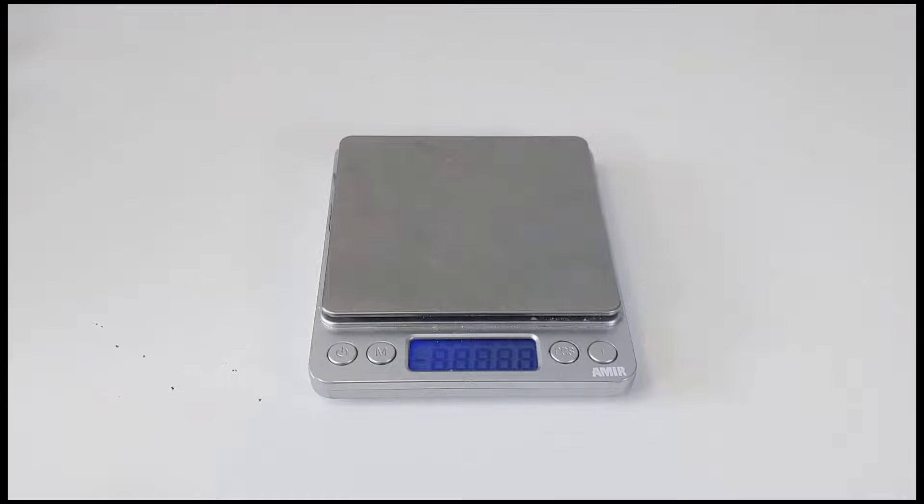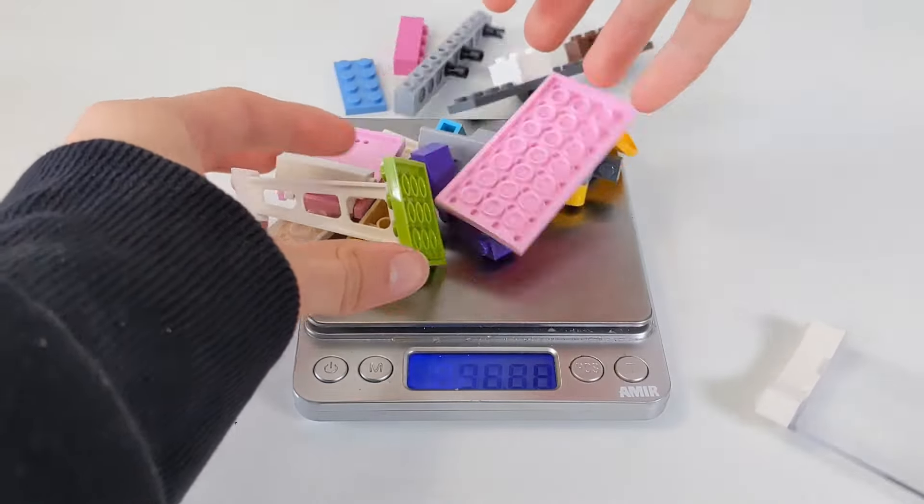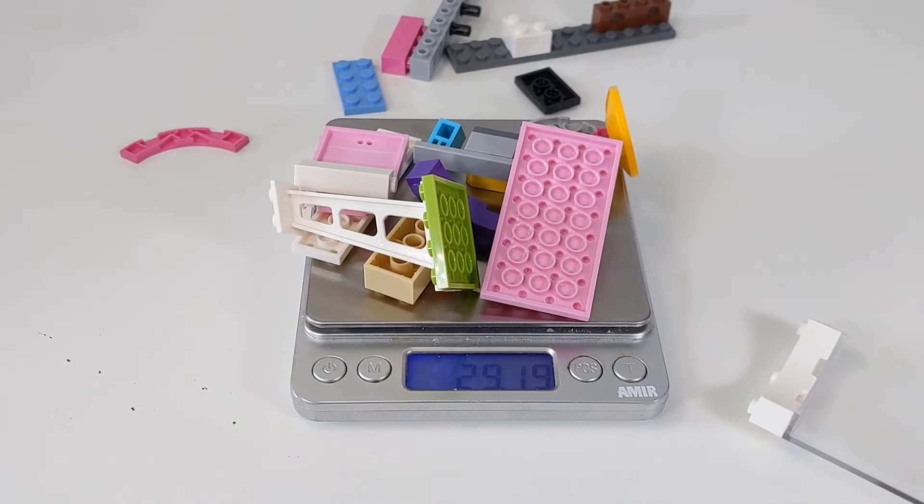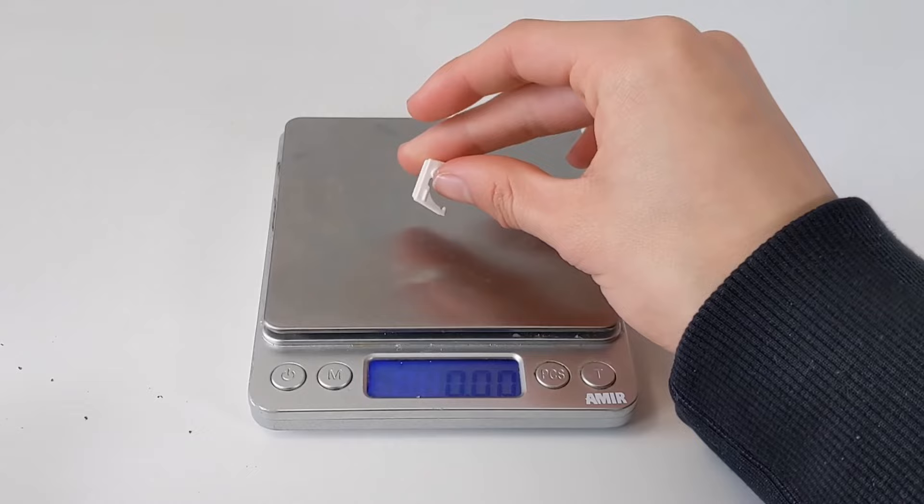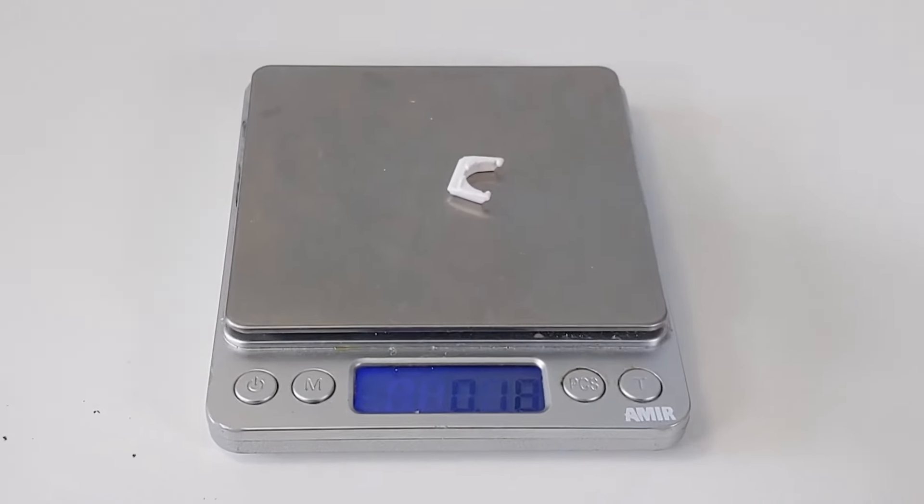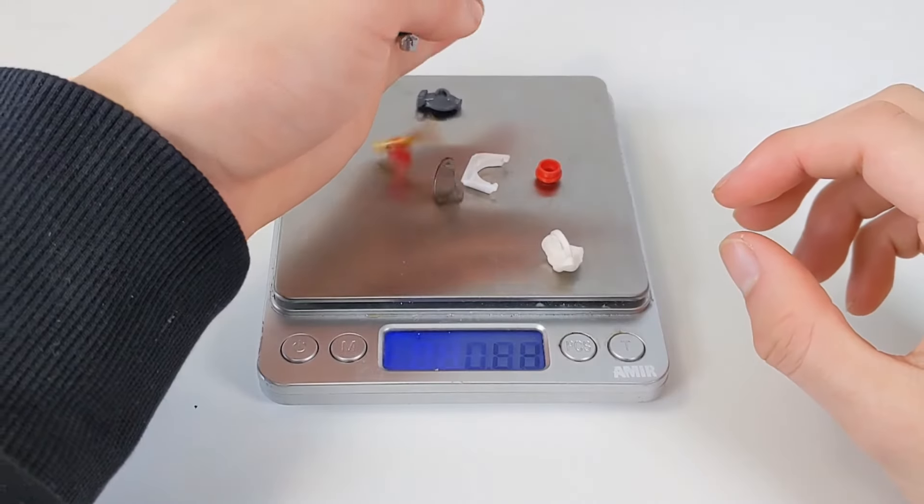You see, when LEGO packages their sets, they have a machine that weighs the amount of parts needed for each set. This is much more convenient than counting each piece, as there could be a counting error. However, by weighing them, they can also miss out on small parts because of their light weight. So as a precaution, they include one extra of the lighter elements per set.